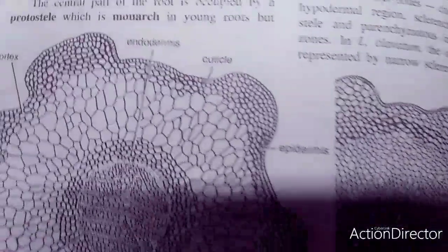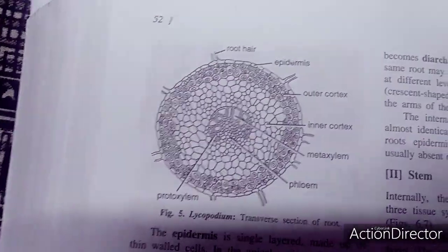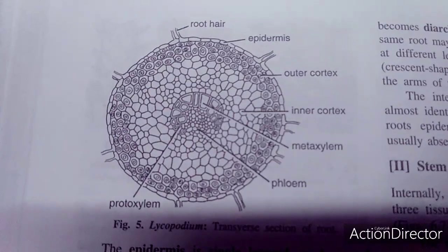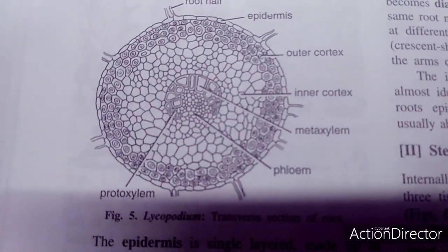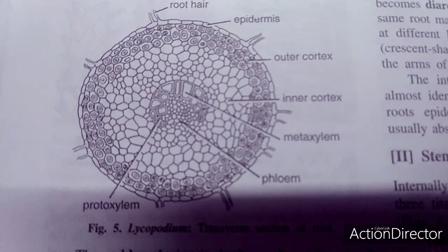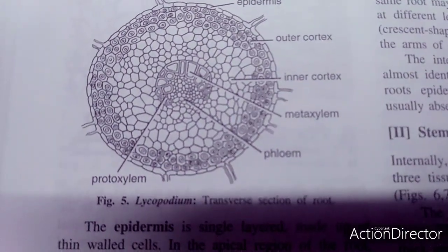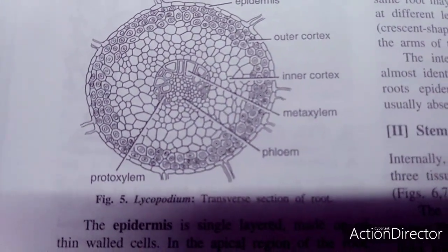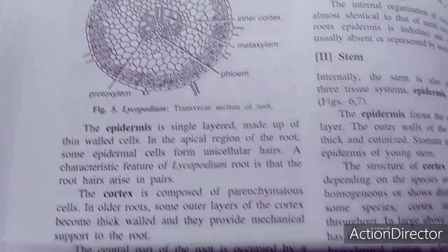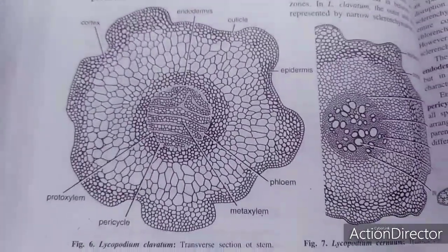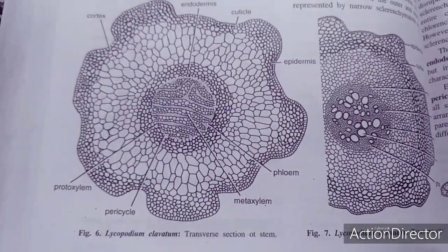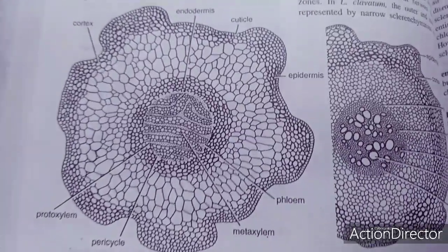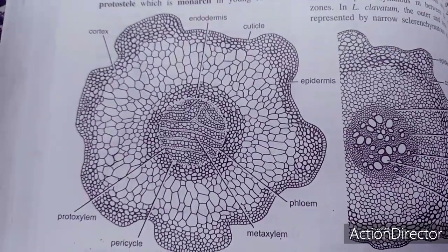Going to the internal anatomy: this is the transverse section of the root. In the root, the outermost layer is the epidermis, followed by outer cortex and inner cortex, then metaxylem, phloem, and protoxylem. In the transverse section of the stem, the outermost layer is the epidermis, above which is a cuticle, and then a broad cortex.